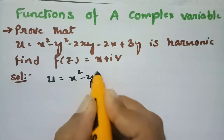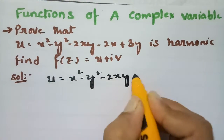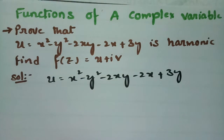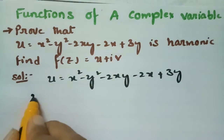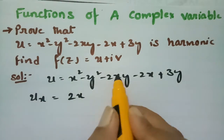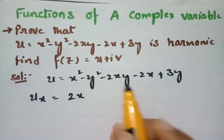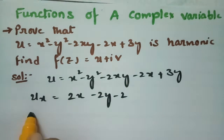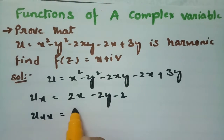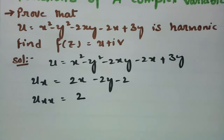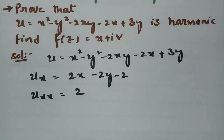u is given as x² - y² - 2xy - 2x + 3y. Taking the derivative with respect to x: ∂u/∂x = 2x - 2y - 2, and the second derivative ∂²u/∂x² = 2.